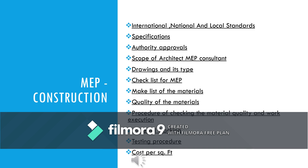There are different types of drawings available: tender drawing, good for construction, shop drawing, as-built drawing, etc. There is also a detailed checklist available for all MEP packages. Similarly, we have a list of materials — what makes are available in the market, what is their quality and specification. The quality of materials, along with test certificates, can be obtained from the market or from the manufacturer.